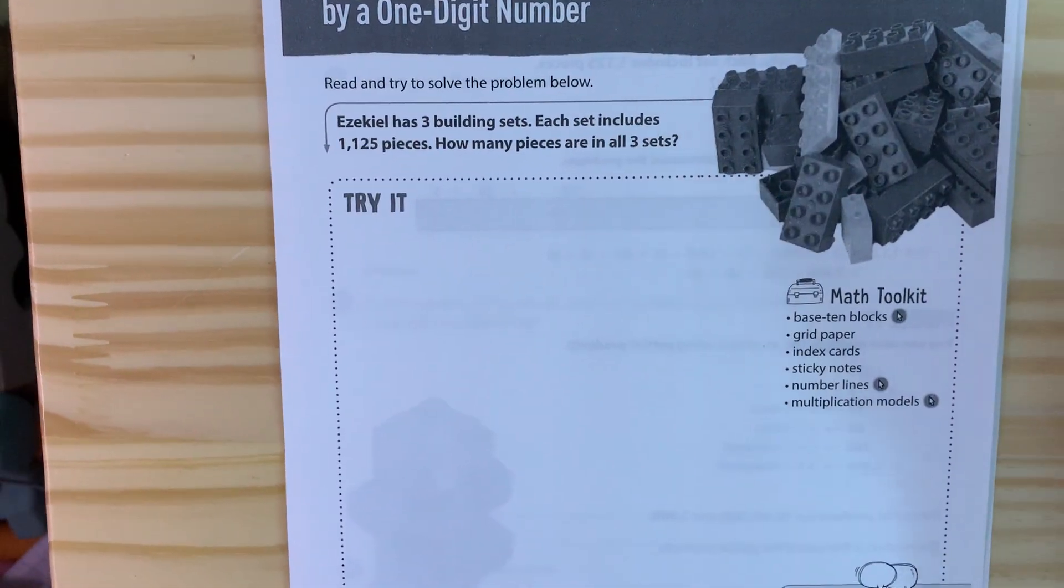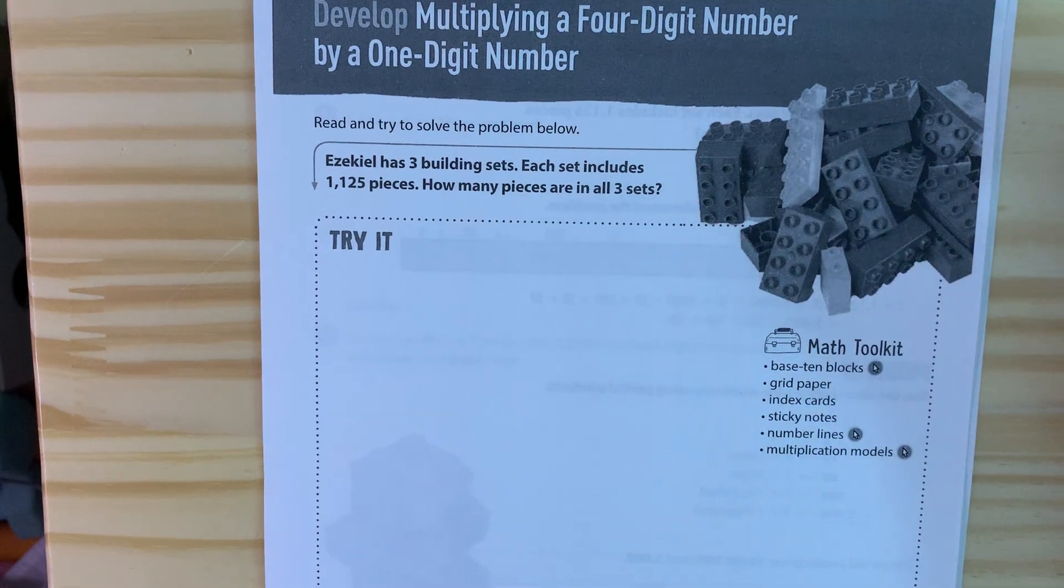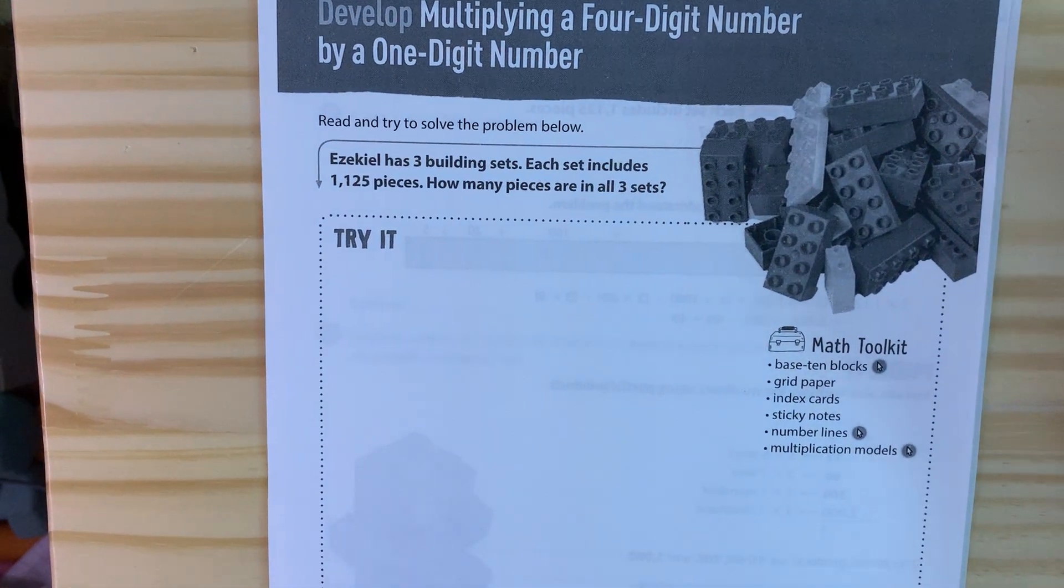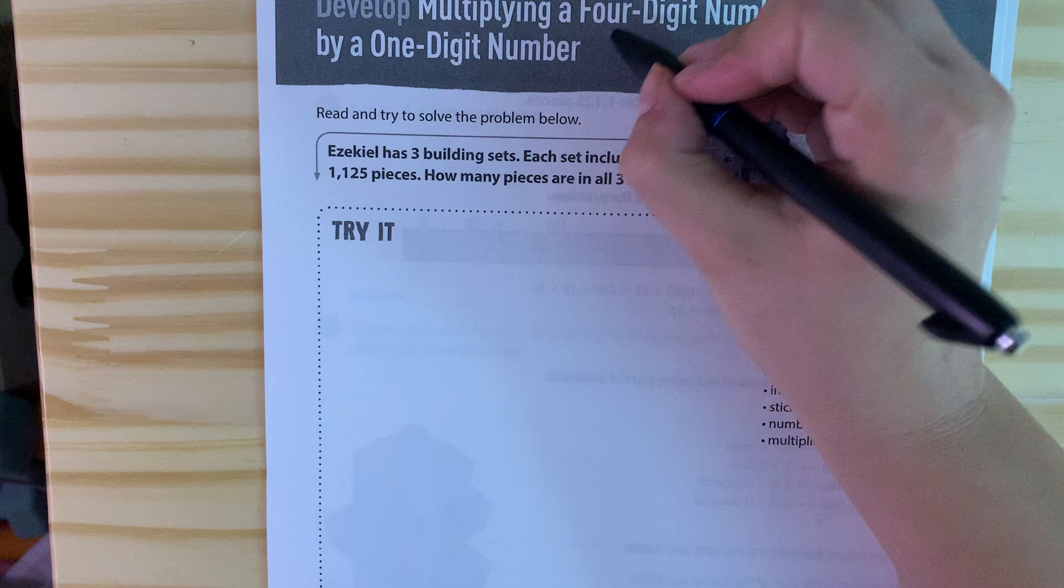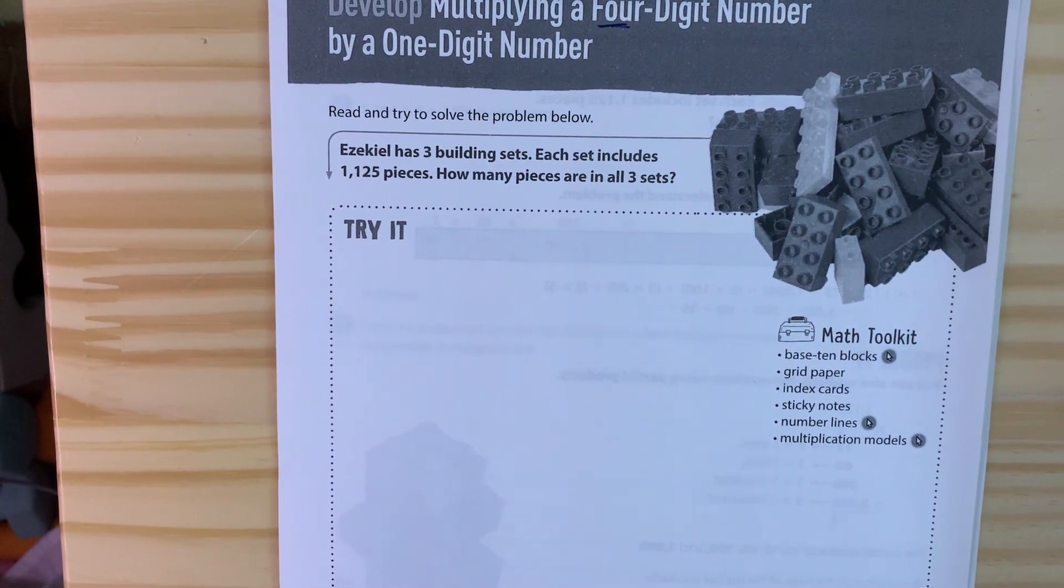Hi friends and welcome to day two of multiplying by a one-digit number. Yesterday we worked on multiplying a three-digit number by a one-digit number. Today we're working on multiplying a four-digit number, meaning we're working with the thousands place.